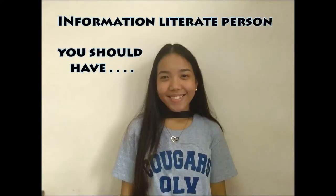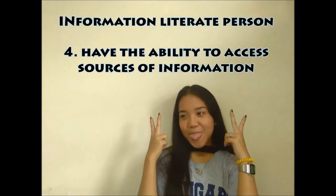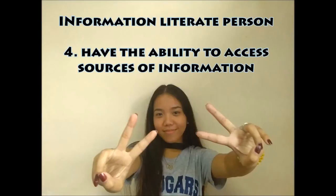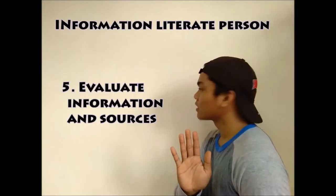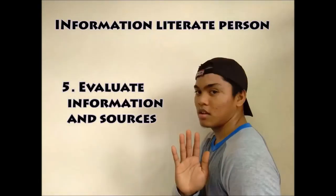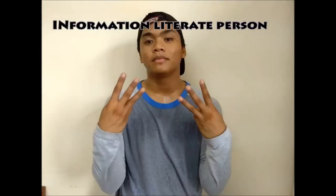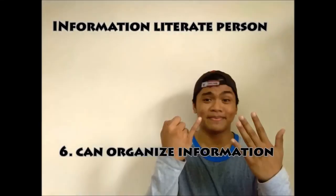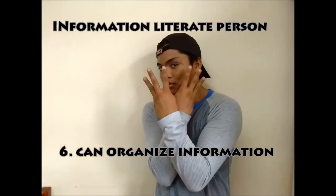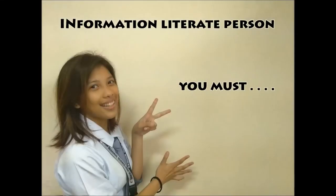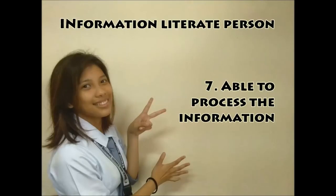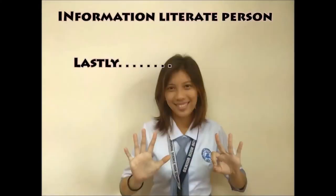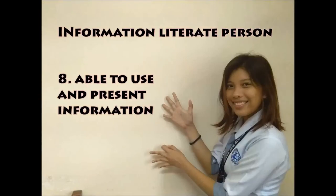Fourth, you should have the ability to access sources of information. Fifth, you should evaluate information and sources. Sixth, you should know how to organize information. Seven, you must be able to process the information. And lastly, to become a fully information literate person, you must be able to use and present information.